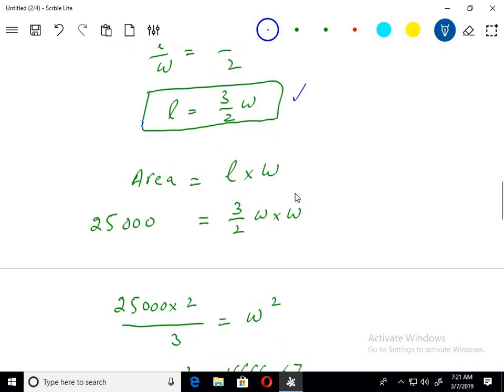Area equals length multiplied by width. Just putting the value of length here as 3 over 2 W, then W. Area is 25,000.